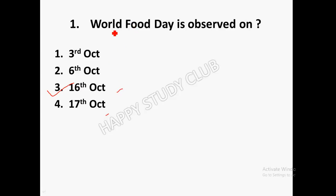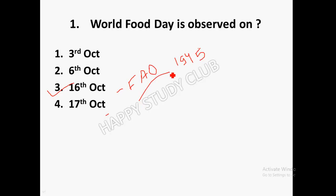World Food Day is observed on 16th October because FAO — the Food and Agriculture Organization — was formed on 16th October 1945. FAO is an agency of the United Nations, and its main objective is to defeat hunger in both developing and developed countries.